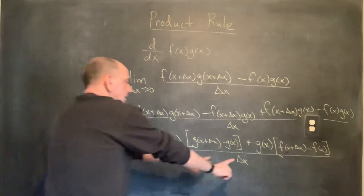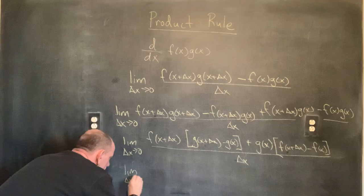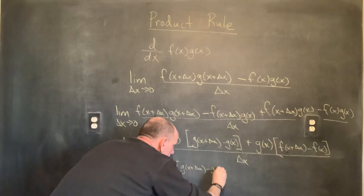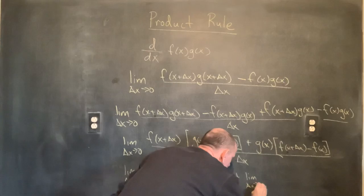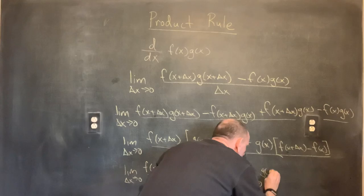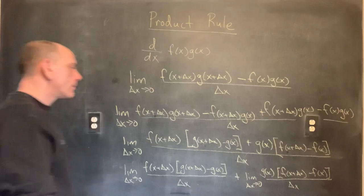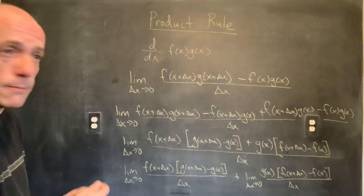We have some limit rules that are going to allow us to do some stuff. I can split this common denominator. I have the limit as delta x goes to zero of f(x + Δx) times [g(x + Δx) minus g(x)] over delta x, plus g(x) times [f(x + Δx) minus f(x)] over delta x. I split the common denominator apart, and then I split the limits apart using the limit rule that says I can split sums.